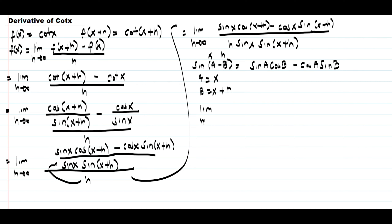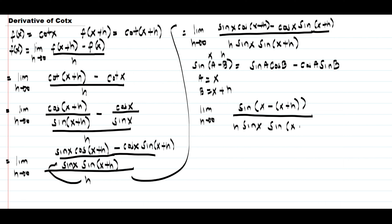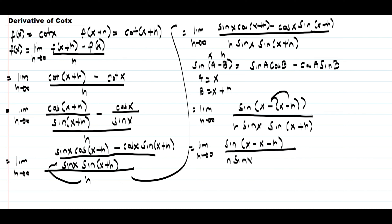So we are going to have the limit as h approaches 0 of sine of x minus x plus h, all over h times sine x times sine of x plus h. Then let us distribute the negative sign inside, giving us sine of x minus x minus h, which simplifies the argument to negative h.